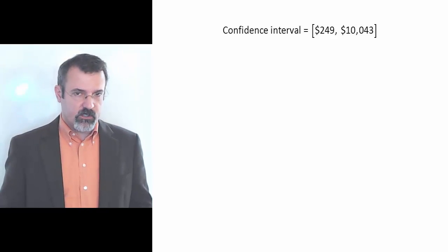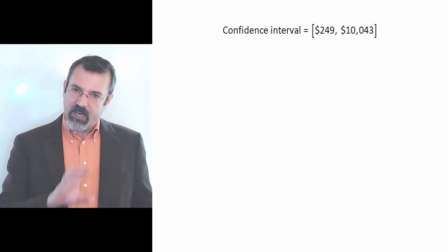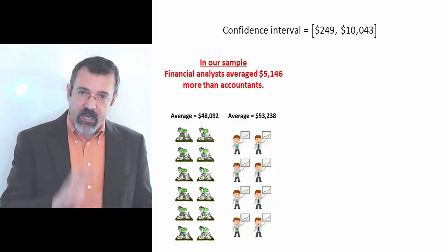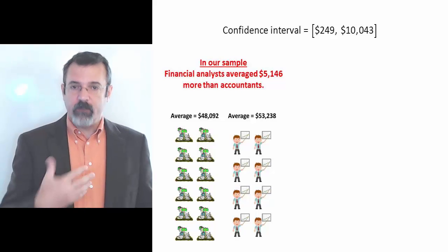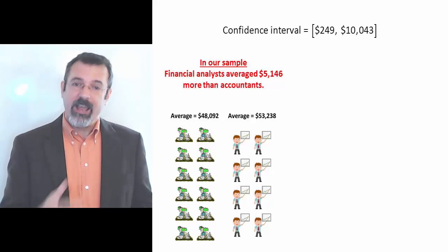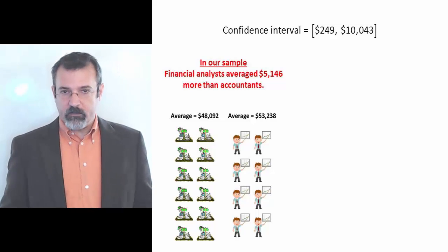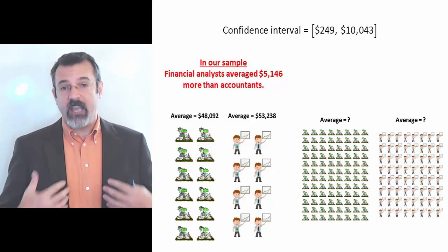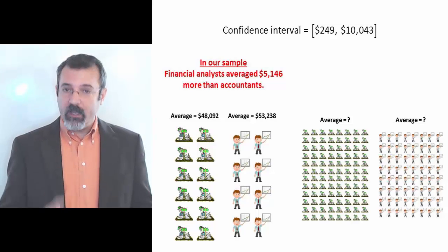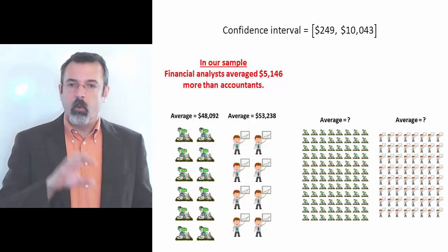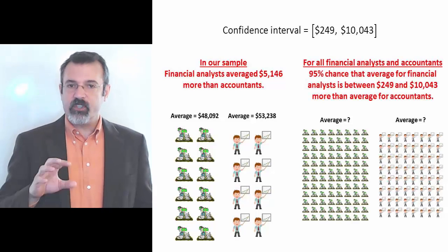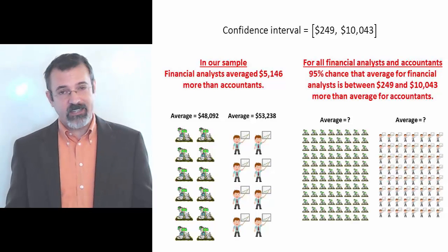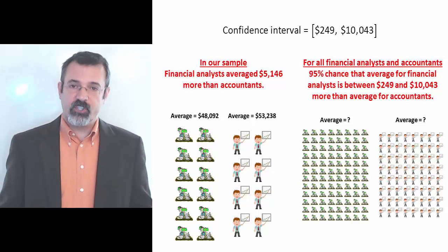So we can make two statements here. The first is: when we looked at our sample of 12 accountants and 8 financial analysts, we observed that these 8 financial analysts earned, on average, $5,146 more than these 12 accountants. The other statement we can make is: we don't know the average salaries of all accountants or all financial analysts. However, based on what we observed in our samples, we're 95% certain that the average salary for all financial analysts is between $249 and $10,043 greater than the average salary for all accountants.